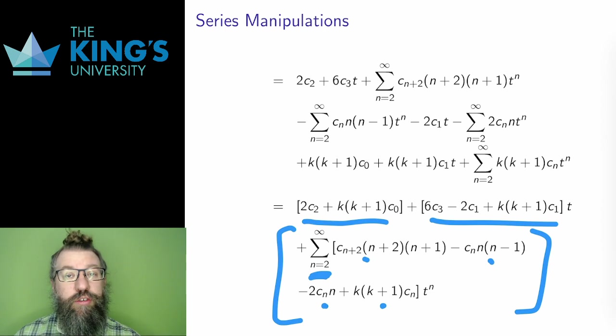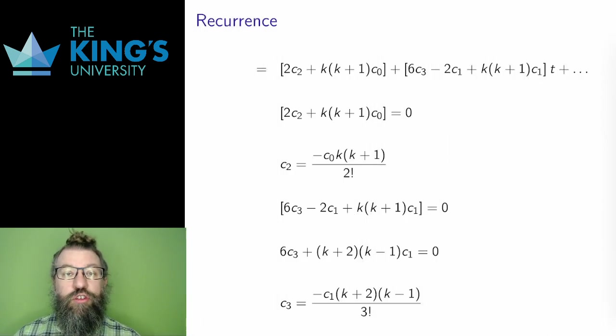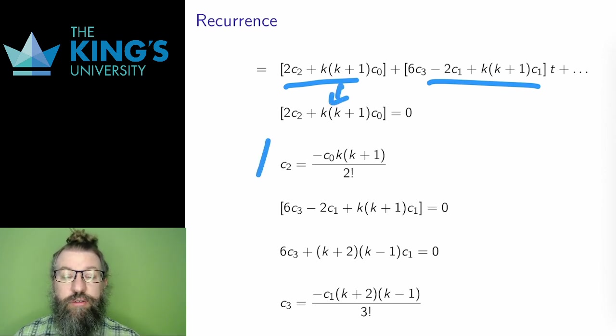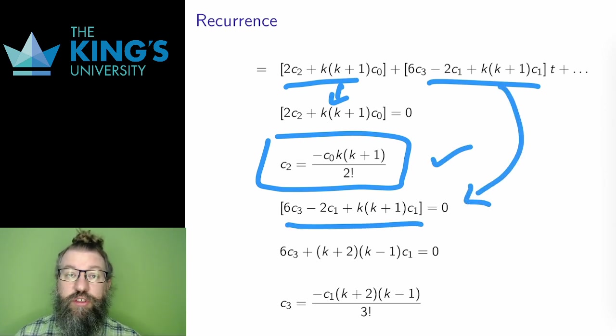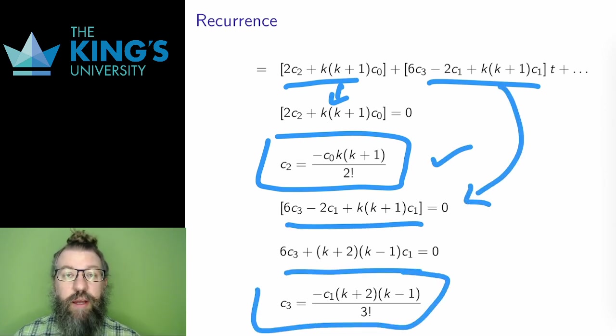All the coefficients need to be zero. This means that two separate pieces also need to be zero, the constant piece and the linear piece. I'll work with those first. As usual, c0 and c1 are parameters set by the initial conditions, which I'll leave unknown for now. Then I can take the constant piece, which involves c2 and c0, and solve for c2. That gives this expression. I can also take the linear piece, set it equal to zero, and solve for c3, which gives this expression, and this is the start of the recurrence relation.